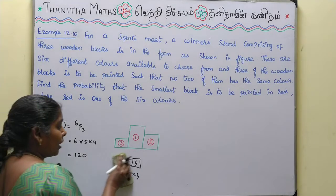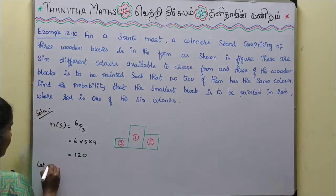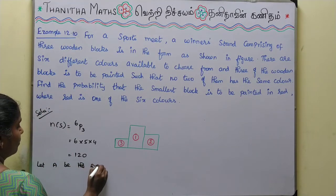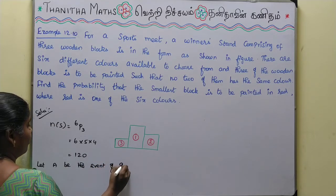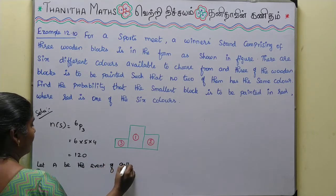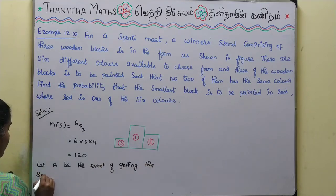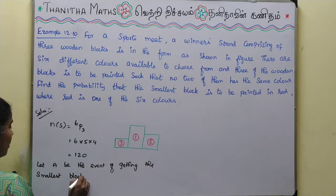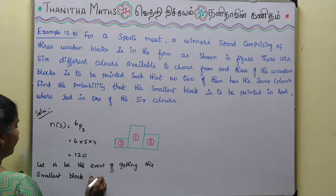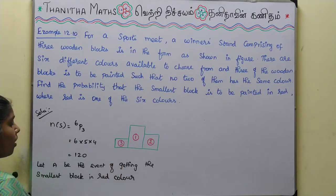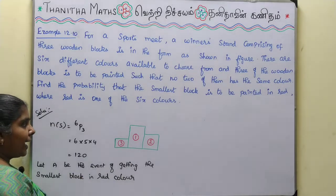Now let A be the event of getting the smallest block painted in red color.